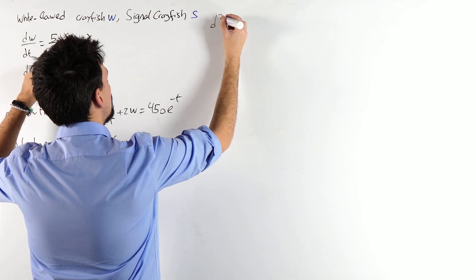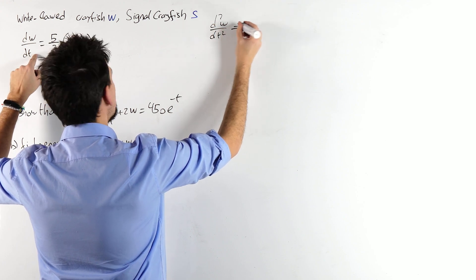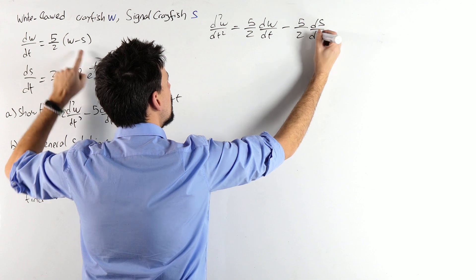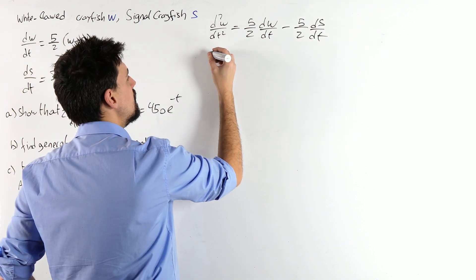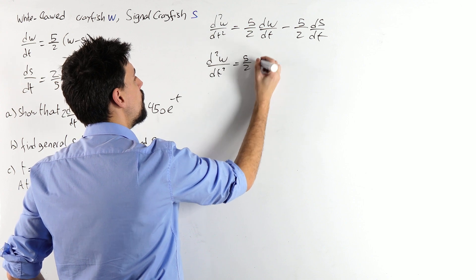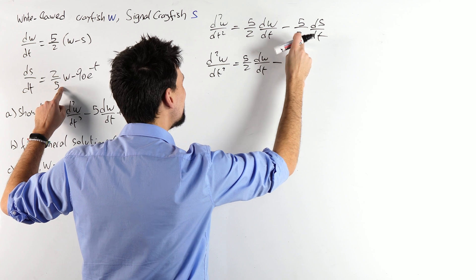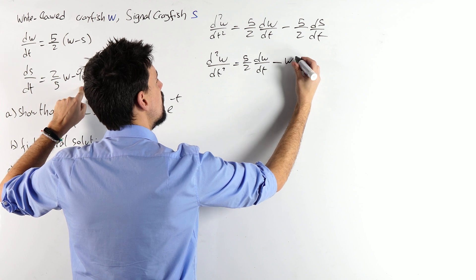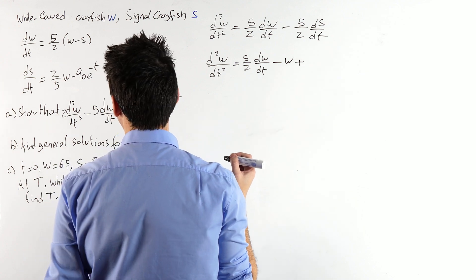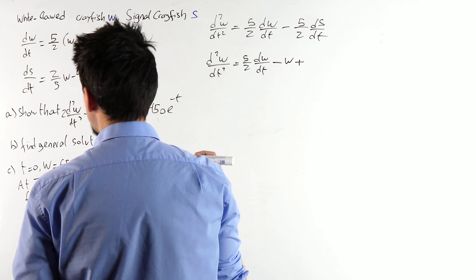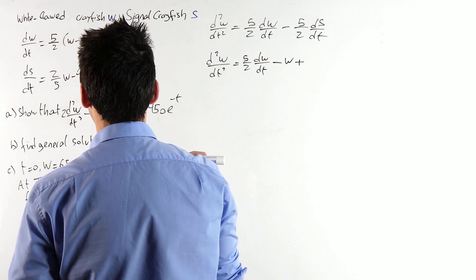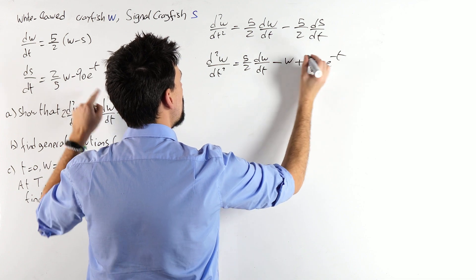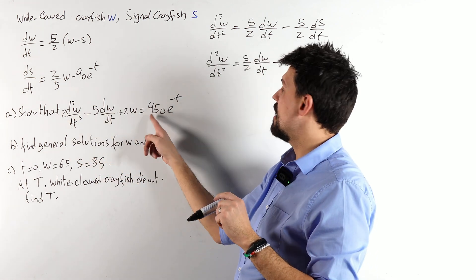d²W/dt² equals (5/2)(dW/dt) minus (5/2)(dS/dt). And luckily we know dS/dt, so substituting in: d²W/dt² = (5/2)(dW/dt) — and look, there's a 5/2 and a 2/5 which cancel out — minus W, and then I've got a minus minus so that's a plus. 5 halves of 90 is 450 over 2.